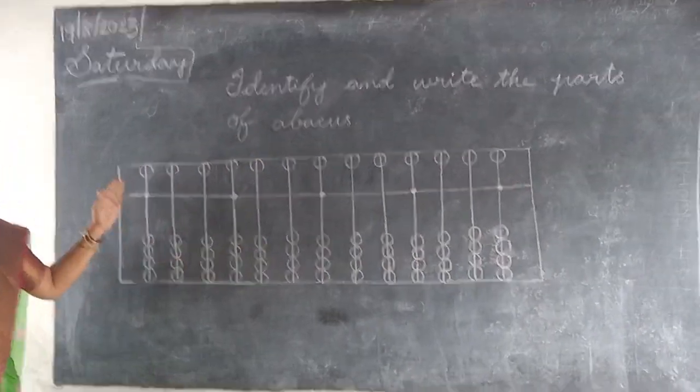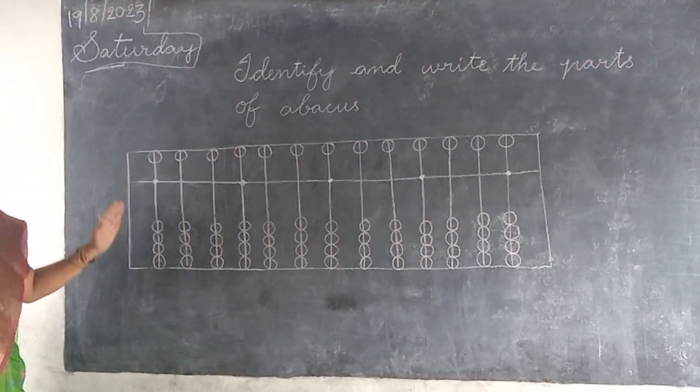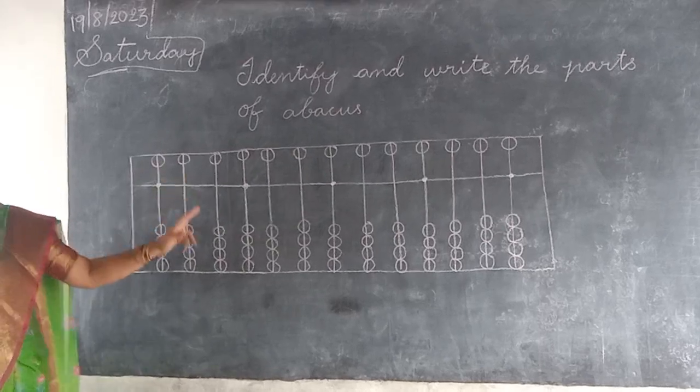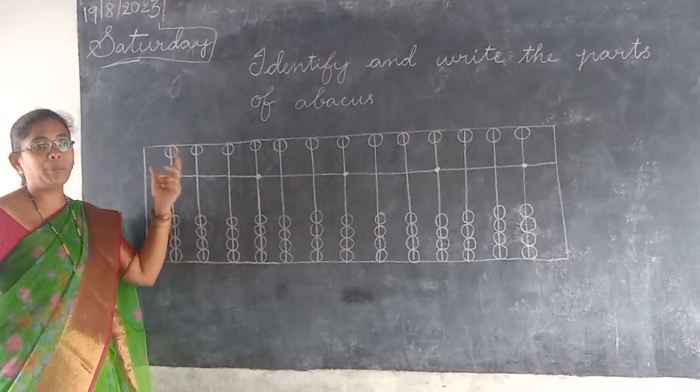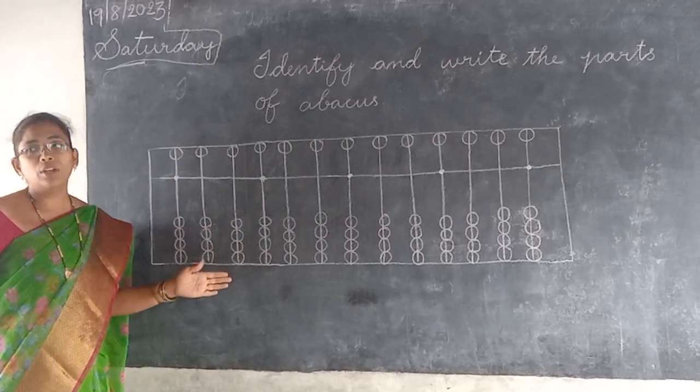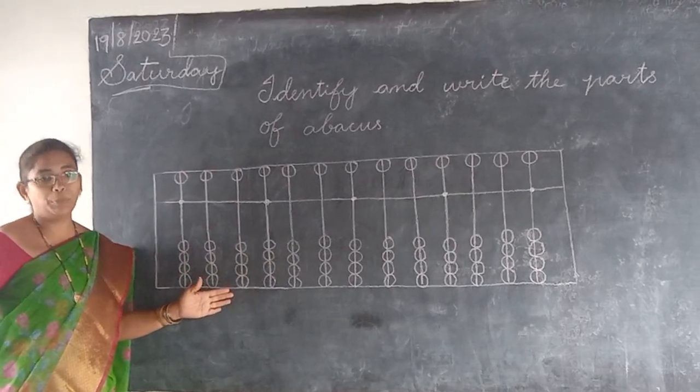Now, each rod has 5 beads: one heaven bead and 4 actual beads (earth beads).